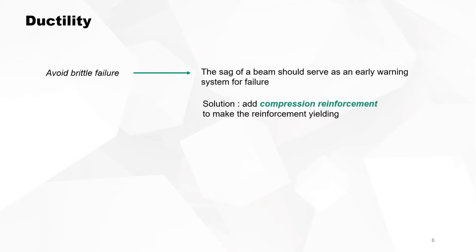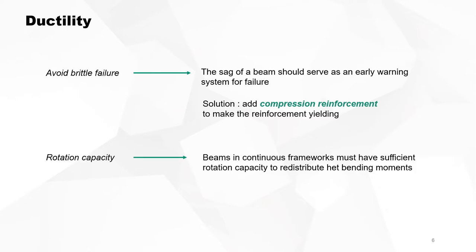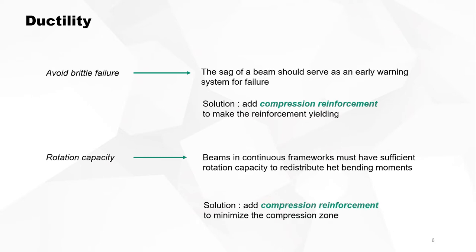How can we solve this? We can do that by adding compression reinforcement to make the reinforcement yield. For rotation capacity, beams in continuous frameworks must have sufficient rotation capacity to redistribute the bending moments. The solution again is adding compression reinforcement to minimize the compression zone.